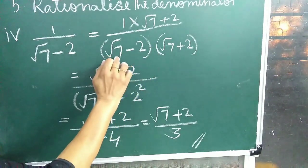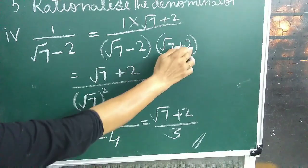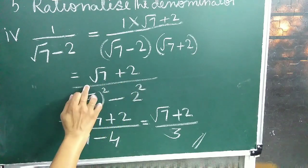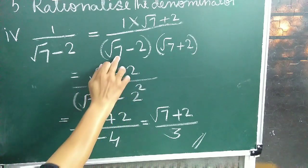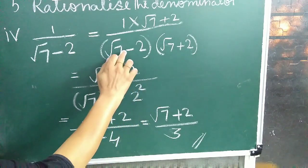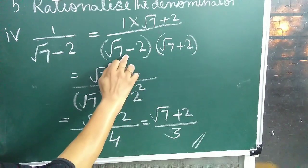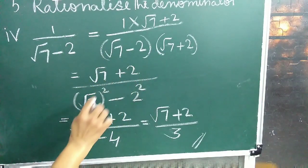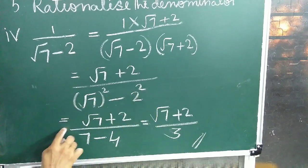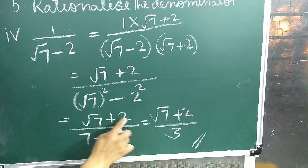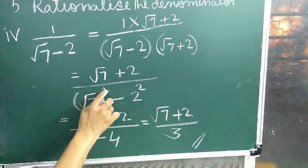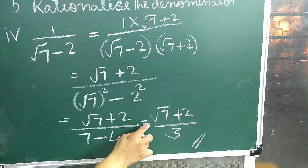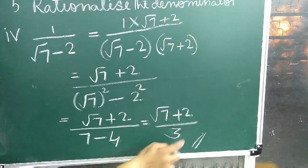Fourth question: 1 upon root 7 minus 2. Multiply the denominator by its conjugate root 7 plus 2. This is in the form of identity a plus b into a minus b equals a square minus b square. So the denominator becomes root 7 whole square minus 2 square, that is 7 minus 4 equals 3. The answer is root 7 plus 2 upon 3.